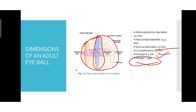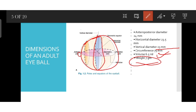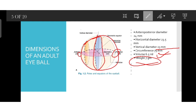One very important thing: the anterior pole is present in the center of the cornea, and the posterior pole is towards the center of the retina.